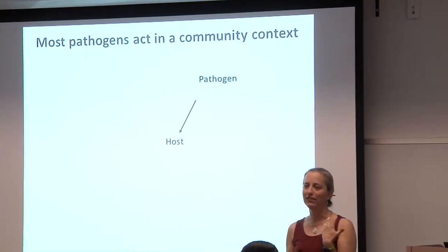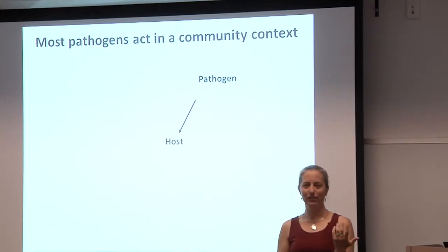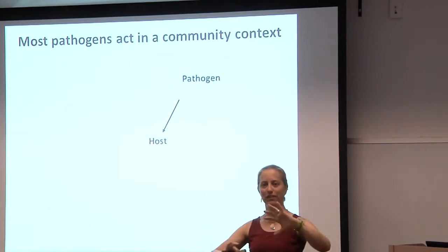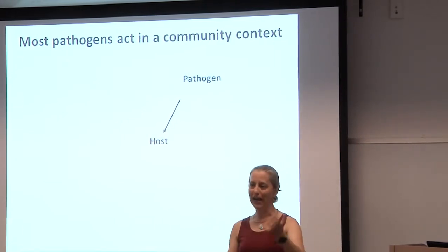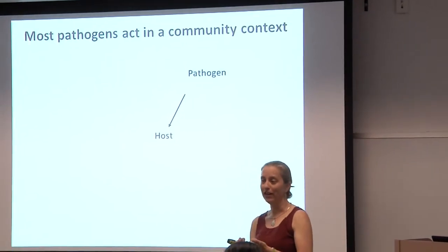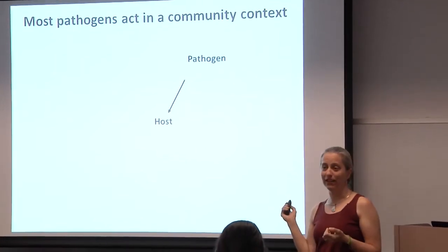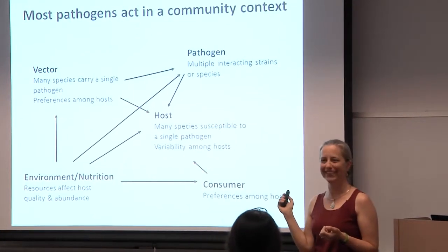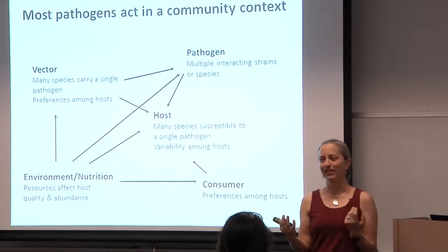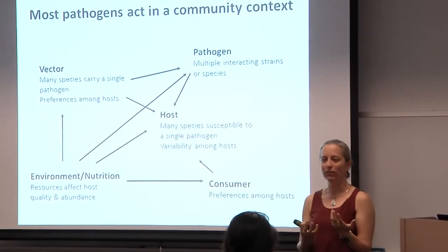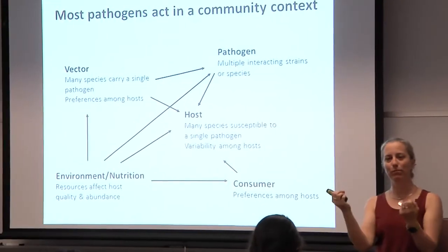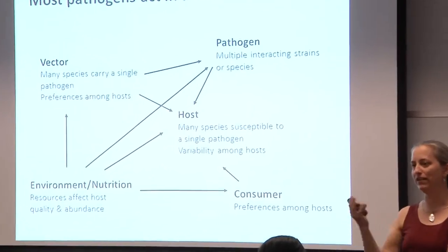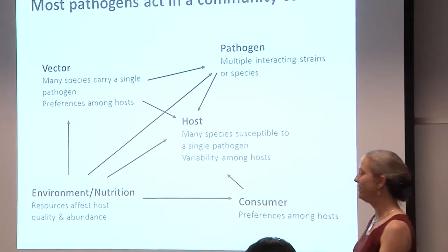But coming into disease ecology, my lens is as a community ecologist. I'm interested in species interactions and how the environment modifies interactions. When I look at just host and pathogen, I think it's missing something. I would redraw the diagram as a much more complex set of interactions — not simply a host, but a host and pathogen and the context in which they're nested.